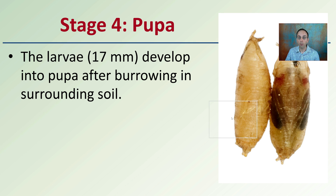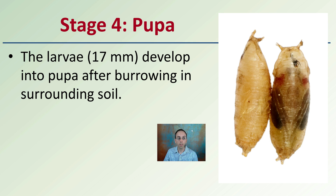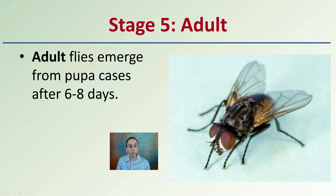The pupa stage, stage four, is where the larvae are about 17 millimeters and develop into pupa after burrowing into the surrounding soil. So we're not only looking at the corpse — the soil around it can also play a very important factor. The adult stage, which we're probably most familiar with, is where the fly emerges from the pupa case, and this occurs after about six to eight days.